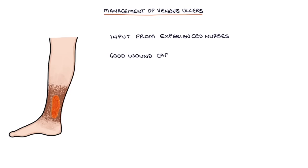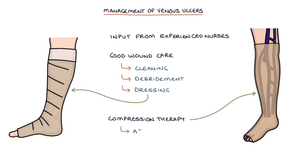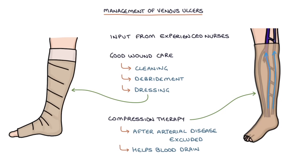Good wound care involves cleaning the wound, debridement — which involves removing dead tissue — and dressing the wound. Compression therapy is used to treat venous ulcers after arterial disease has been excluded with an ABPI, because you don't want to compress the leg if there is arterial disease as well as venous disease. Compression therapy helps blood drain away from the leg and stops it from pooling, which would make the situation worse.